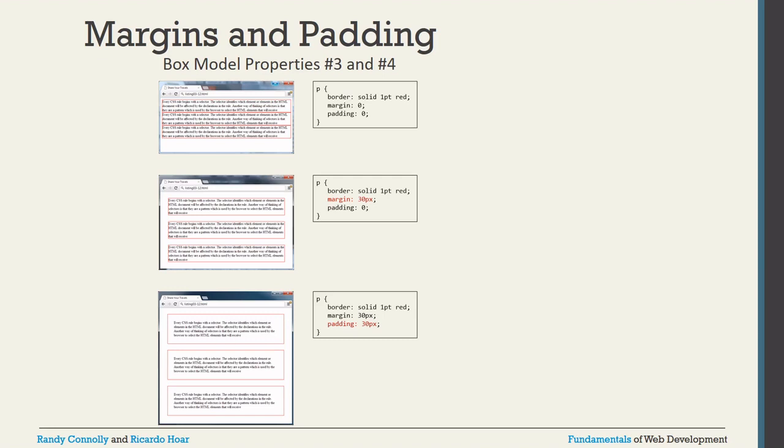Padding controls the space inside the box between the content and the border — top, bottom, left, and right. You can write border properties in shorthand on a single line: for example, 'border: solid 1pt red' — where the first value is the border style, the second is the thickness, and the third is the color. This is the standard shorthand format for the border property.